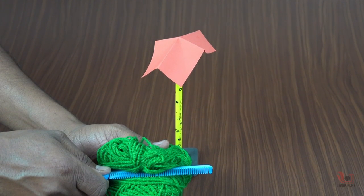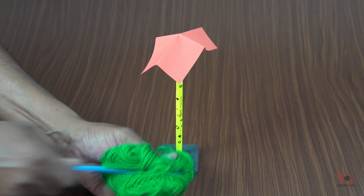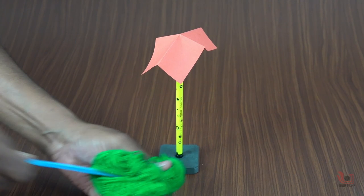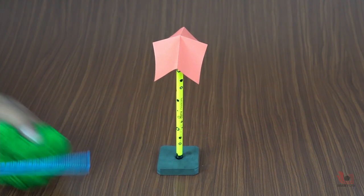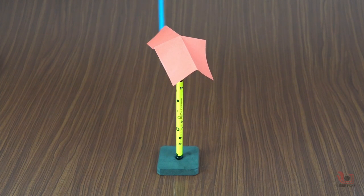Now take a plastic comb and rub it on the wool several times. There will be transfer of electrons between the two objects. The comb and wool will be electrically charged.